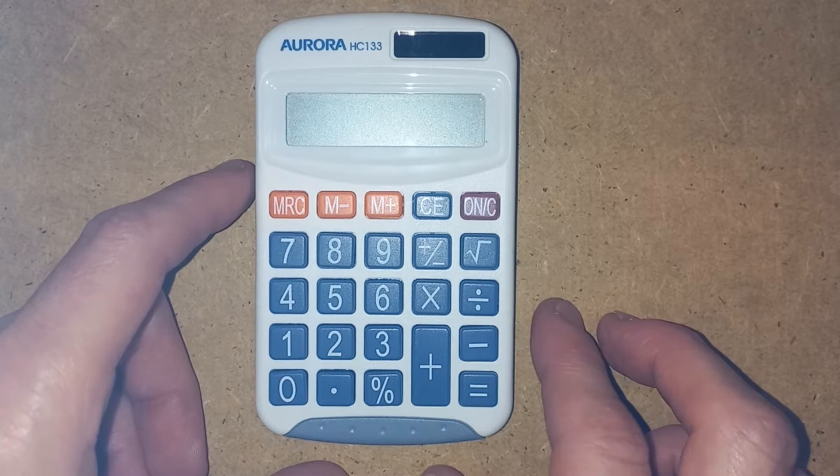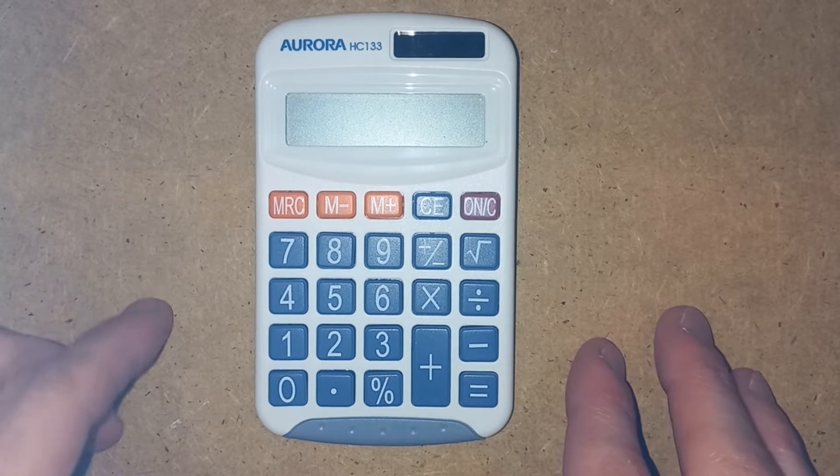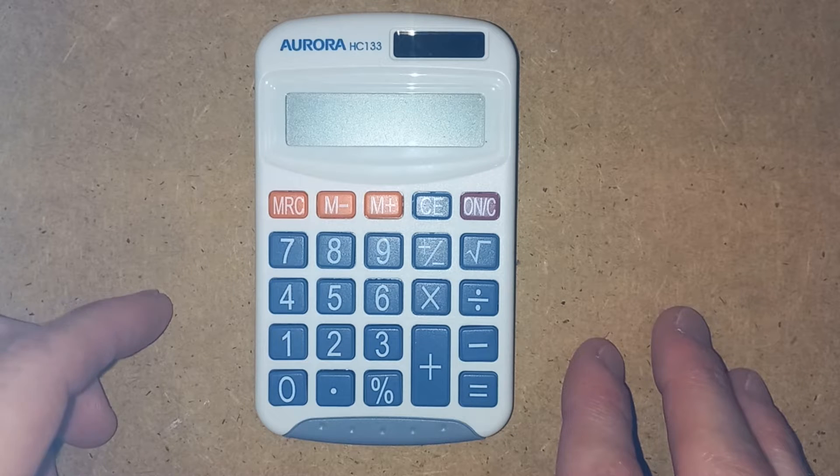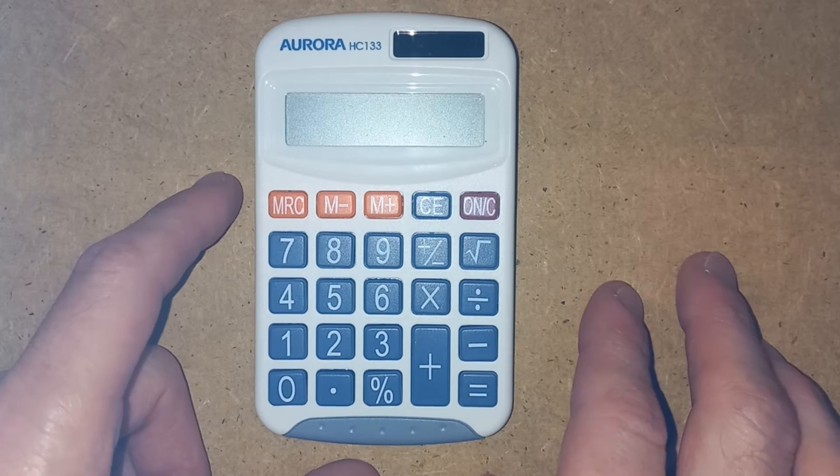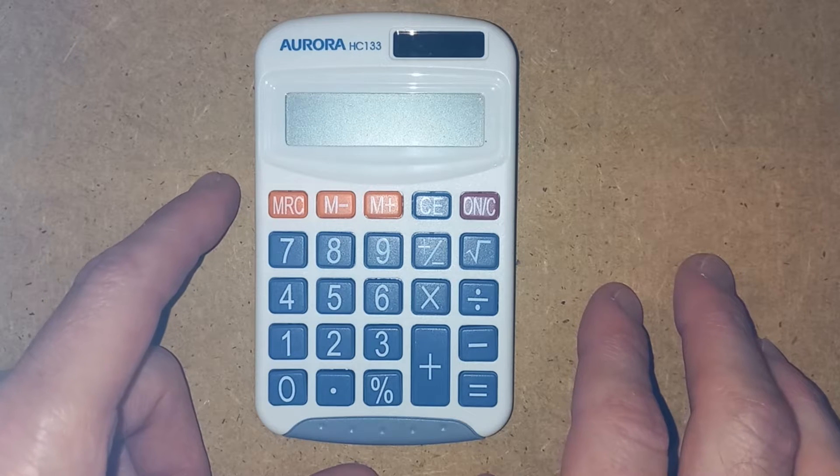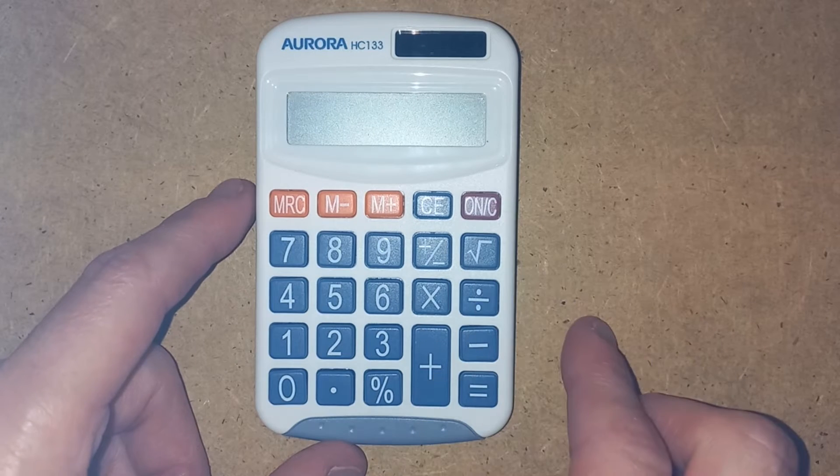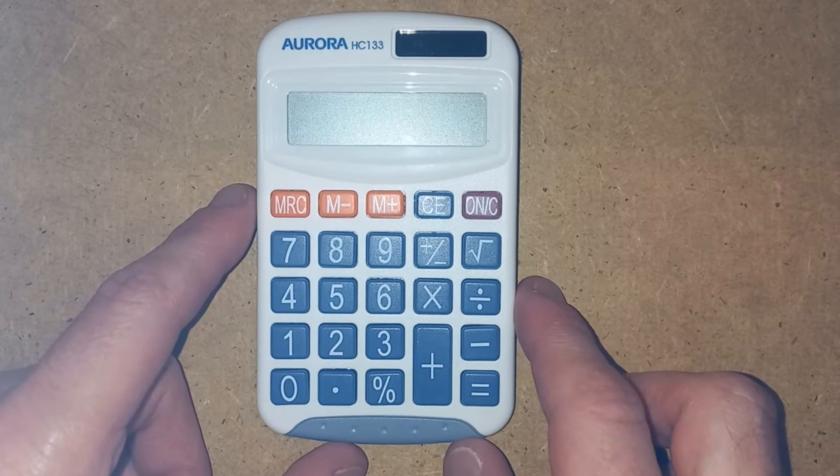But what I've got here is a simple calculator, fairly standard keys on here. You should have most of these buttons on any simple calculator you find. You can buy a simple calculator from a pound, maybe up to 10 pounds if you want to get something a bit more fancy. I've got this one today because it's got a few colors on there and I just think it makes it a bit easier to follow.